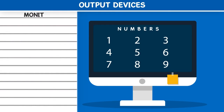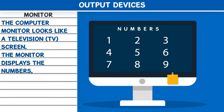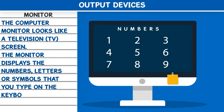Output Devices. Monitor: The computer monitor looks like a television screen. The monitor displays the numbers, letters, or symbols that you type on the keyboard.